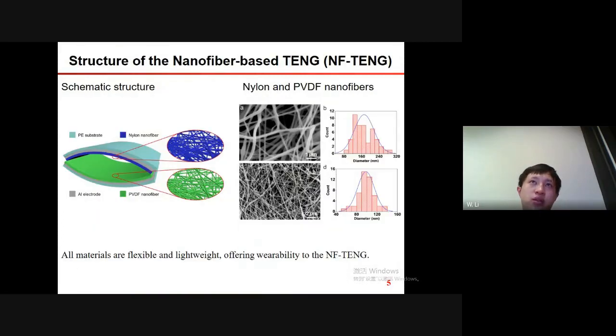So for body motion energy harvesting, we developed a nanofiber-based TENG, called the NF-TENG. Nylon and PVDF, which are typical positive and negative triboelectric materials according to the triboelectric series, were electrospun into nanofibers. So the nanofibers can increase the surface roughness of the film, and therefore, this can enhance the output performance of the TENG. In addition, 20 micrometer-thick aluminum and 50 micrometer-thick PE were used as electrodes and substrate, respectively. So all the materials in our devices are flexible and lightweight, offering the wearability to the NF-TENG.